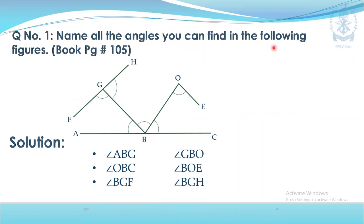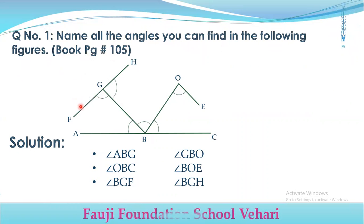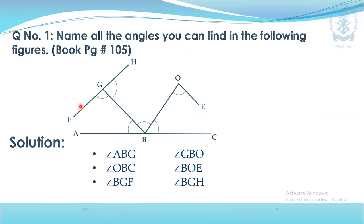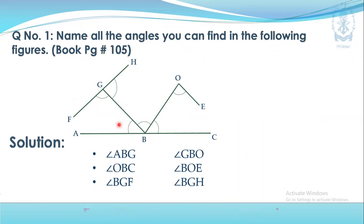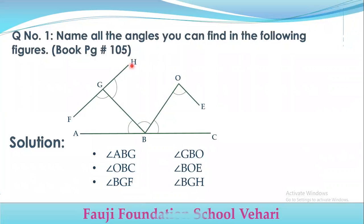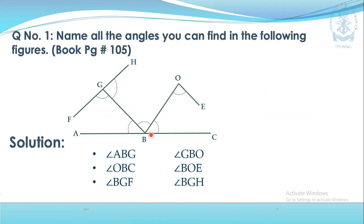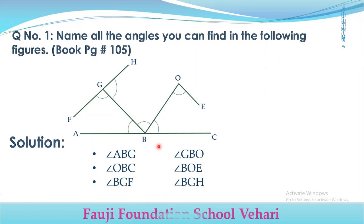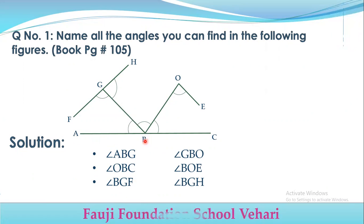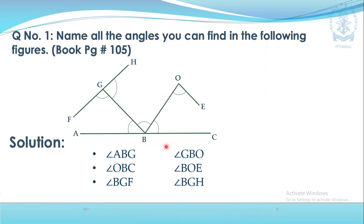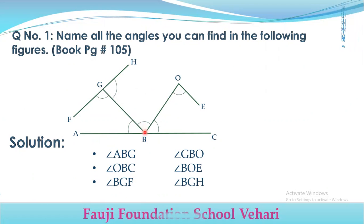For question number one, we name all the angles in the following figures. In the second figure, you can see all the angles: HGB, FGB, ABG, BOC, CBO, and GBO.